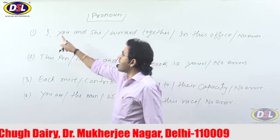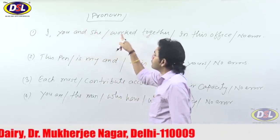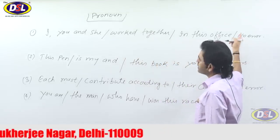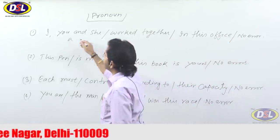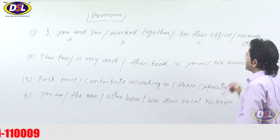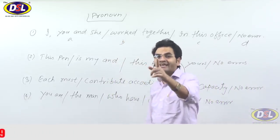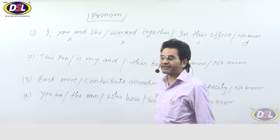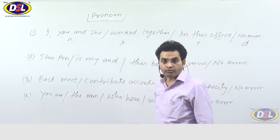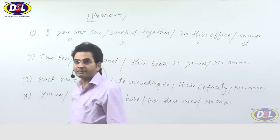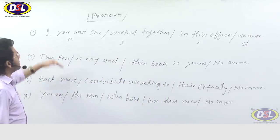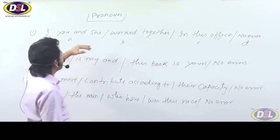Now here you can see: 'I, you and she worked together in this office. No error.' Here we have options A, B, C, D. You have to say where the error is, where the problem is. So I am going to tell you, children, that you have to remember the pronoun — you have to remember two or three key things.